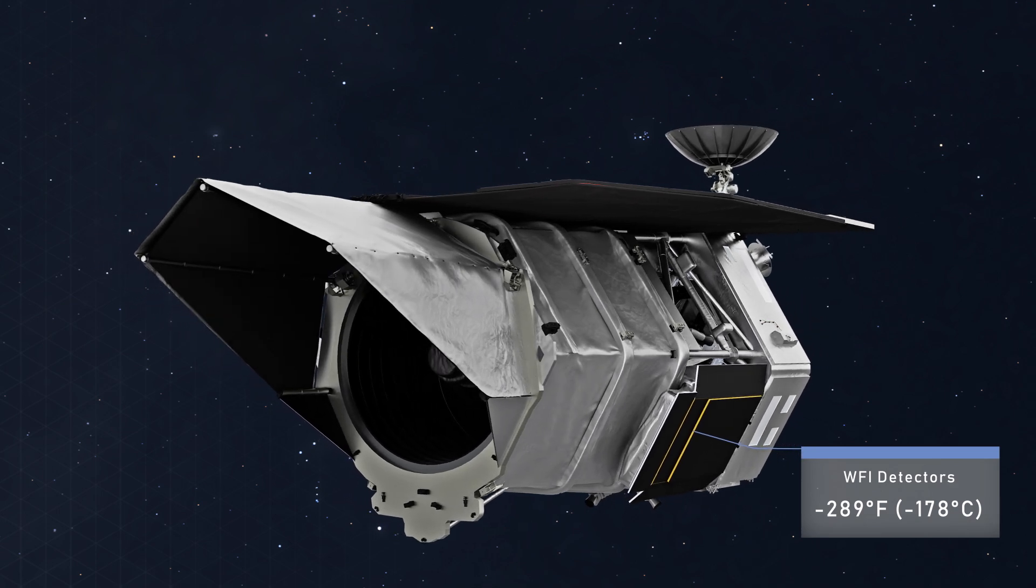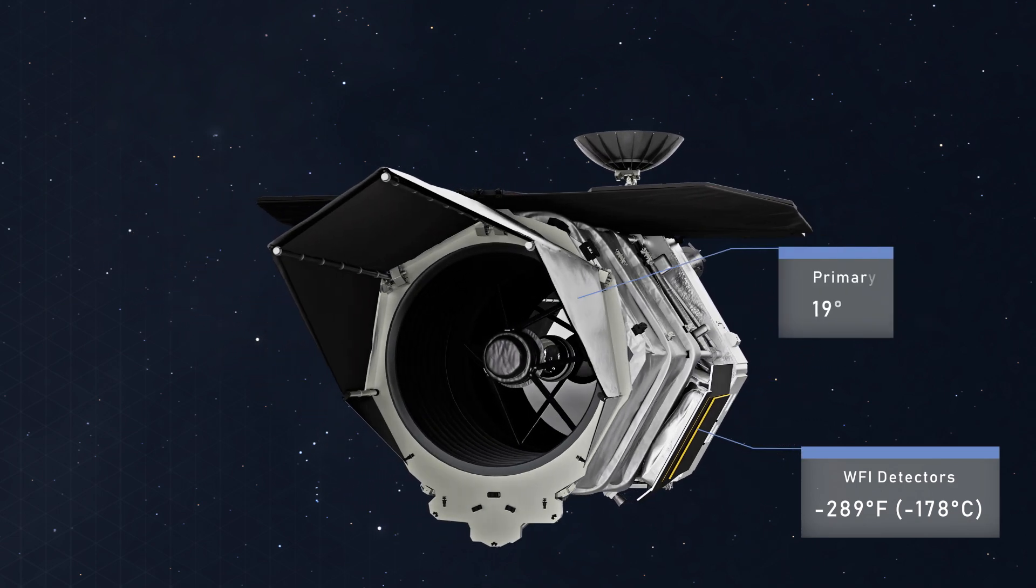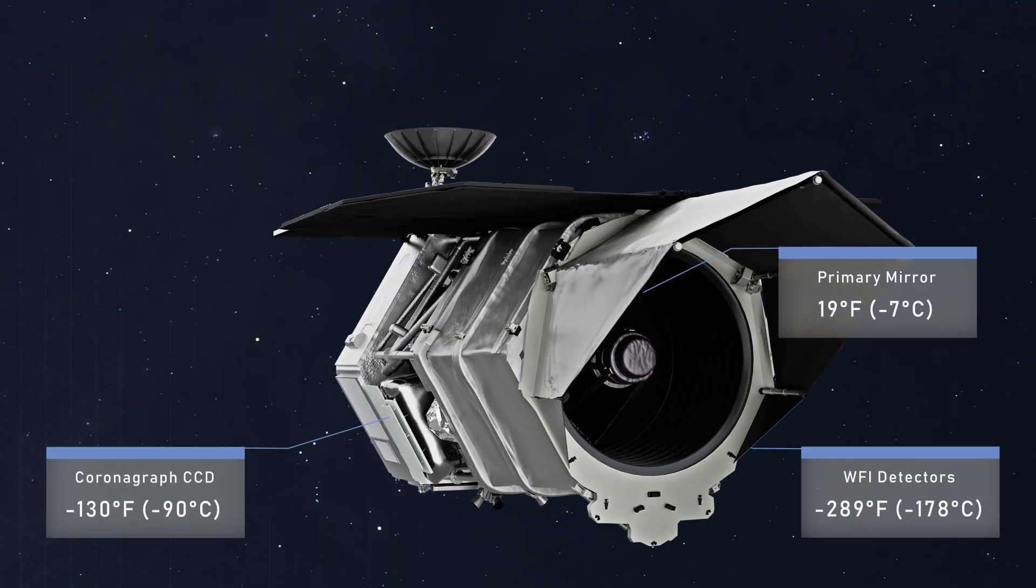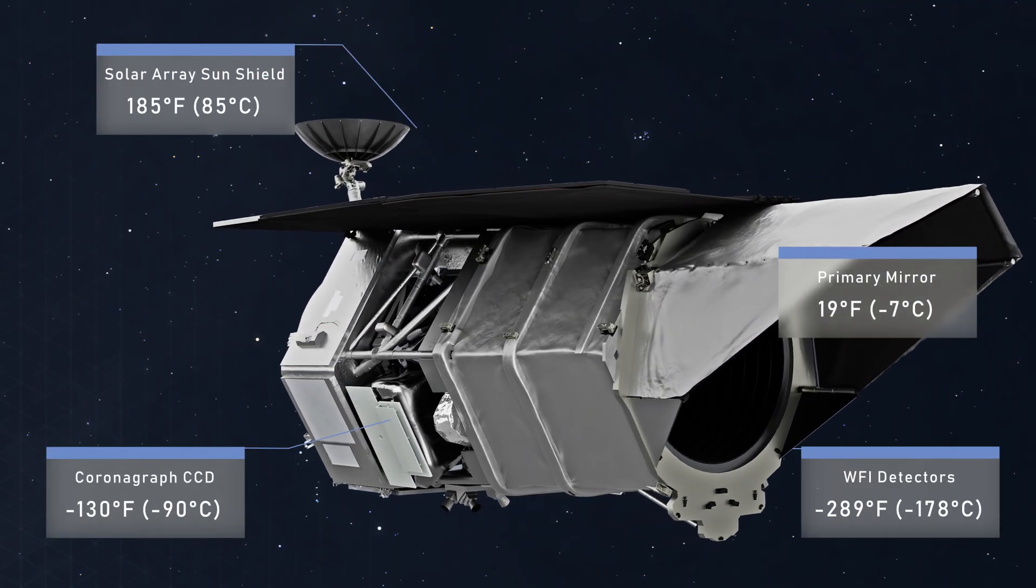Roman, on the other hand, needs far less cooling because it will observe in wavelengths unaffected by a warmer spacecraft, so the shade provided by its solar panels alone does most of the work.